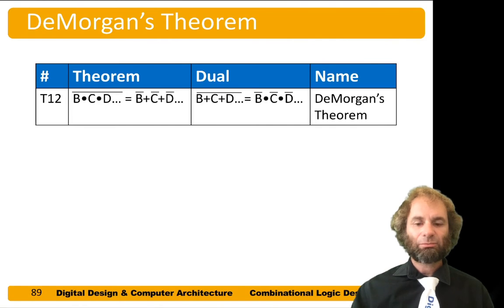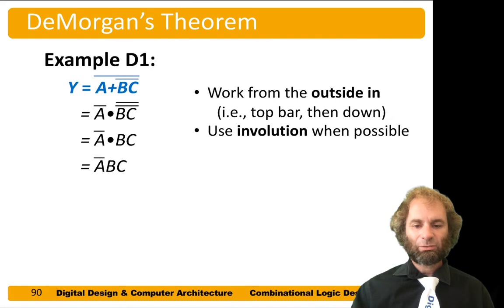Remember De Morgan's theorem says that the NAND of a bunch of variables is the OR of their complements. And its dual says that the NOR of a bunch of variables is the AND of their complements. We can apply this theorem to simplify equations involving complements.